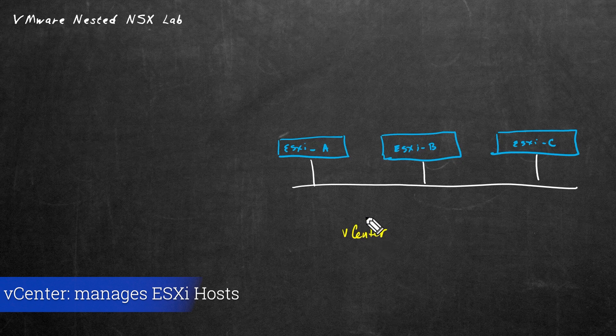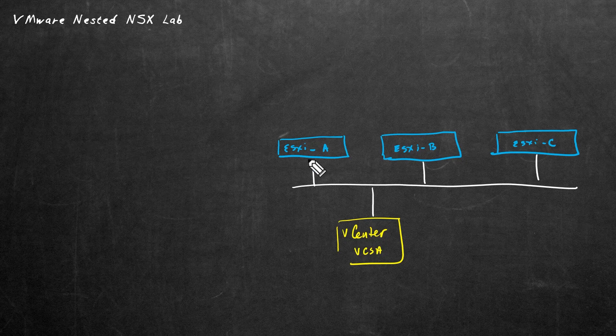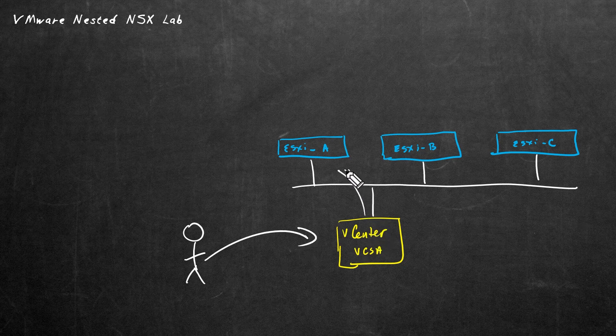So vCenter runs as a virtual machine. If we see the VCSA, that is an acronym for the vCenter server appliance. So we need vCenter that's going to be running in our network that we can use to collectively manage our ESXi hosts. So the game plan would be you and I, we would log into vCenter, and then vCenter would interact with the ESXi host.